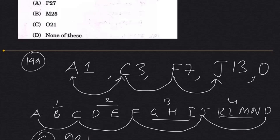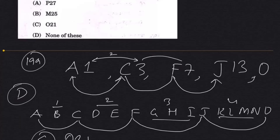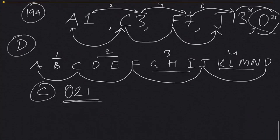Obviously the answer is O — it's there in the options so you don't have to waste time solving the number. But if you want to verify: the number differences are 1 to 3 (diff 2), 3 to 7 (diff 4), 7 to 13 (diff 6) — so differences are 2, 4, 6, meaning next difference is 8. So 13 plus 8 equals 21. The answer is O21. That's fairly simple.